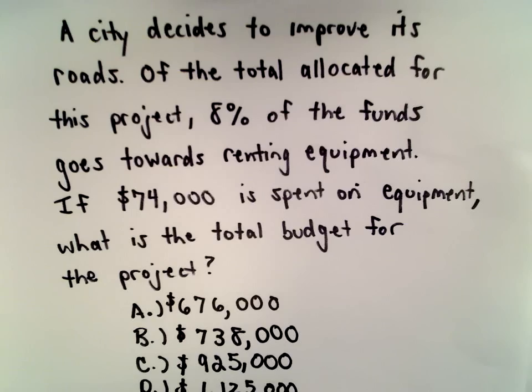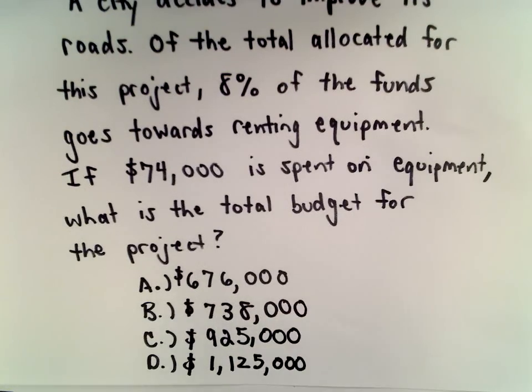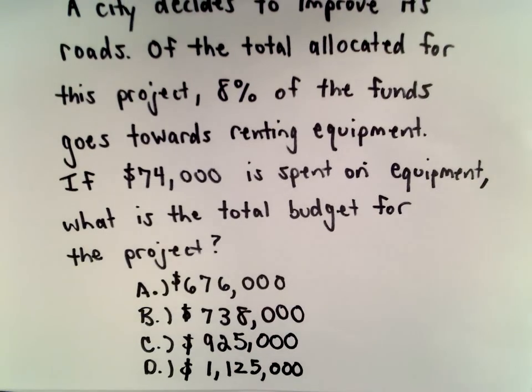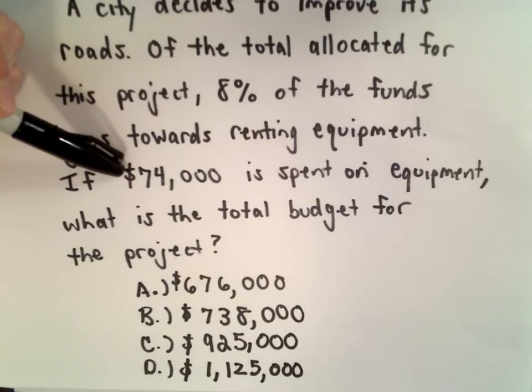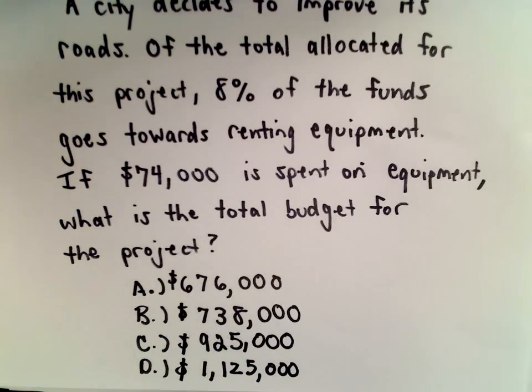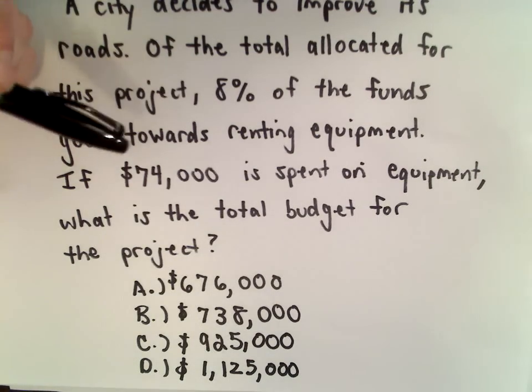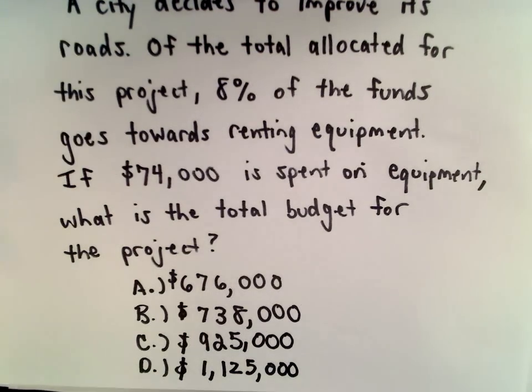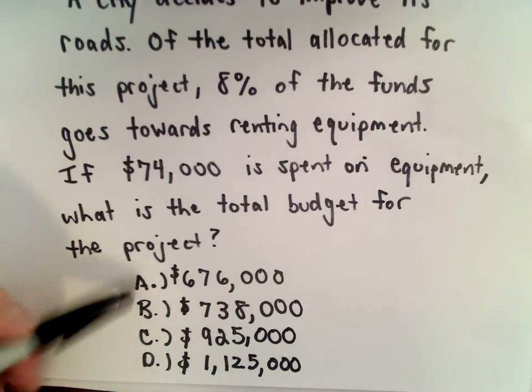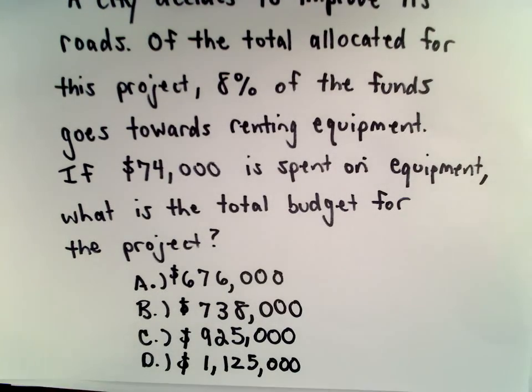So a city decides to improve its roads, going to spend a little bit of money making the roads better. And of all the total amount allocated for the project, 8% of those funds are going to go towards renting the necessary equipment. If it turns out that they end up spending $74,000 on equipment, we want to know what's the total budget for the project. So 8% of their total budget ends up being $74,000. We want to figure out which one of these answer choices is correct.